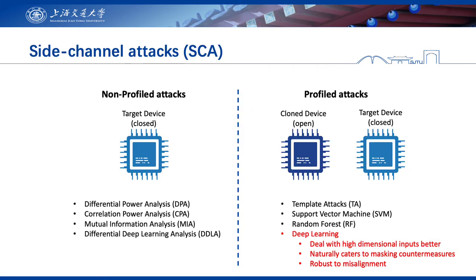In side-channel analysis, we usually divide the attacks into two categories. First is non-profiled attacks, where we only have a target device available. We can't change the key, and usually we attack on the fly with methods like DPA and CPA. On the other side, we have profiled attacks, where we can get access to a cloned device, which is open and similar enough to the target device. We can use the cloned device to characterize the leakage using machine learning techniques, for example, template attack and random forest.